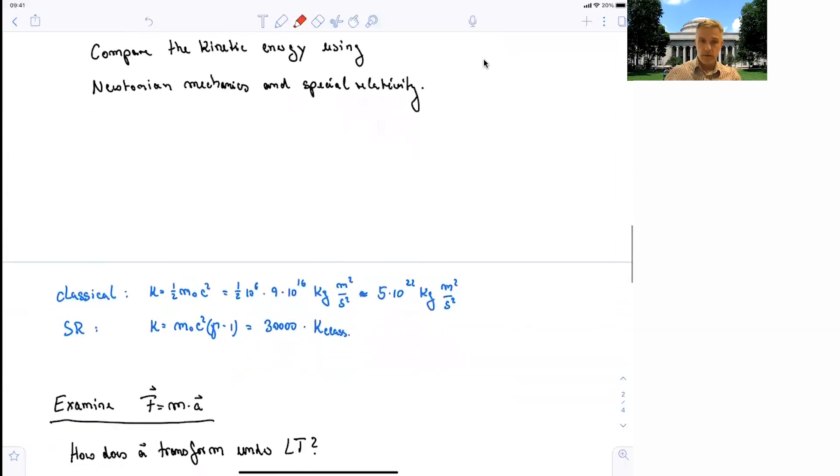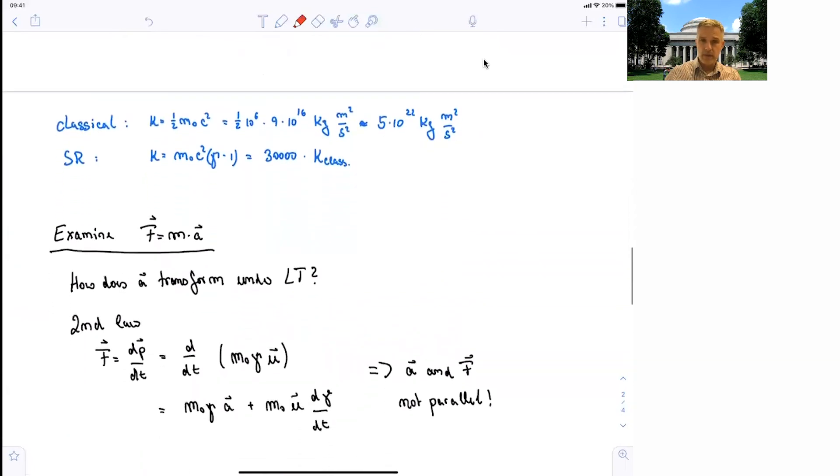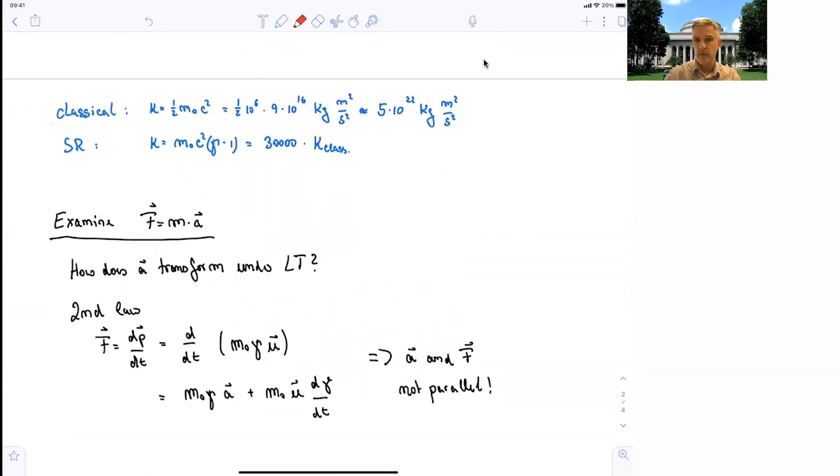One more word on F equal ma. The question is, how does this transform under a Lorentz transformation is something we already halfway figured out. So here, you basically want to see how A transforms under Lorentz transformation. We have started the discussion by saying, in Galilean transformation, the acceleration is invariant, while in Lorentz transformation, that's not the case.